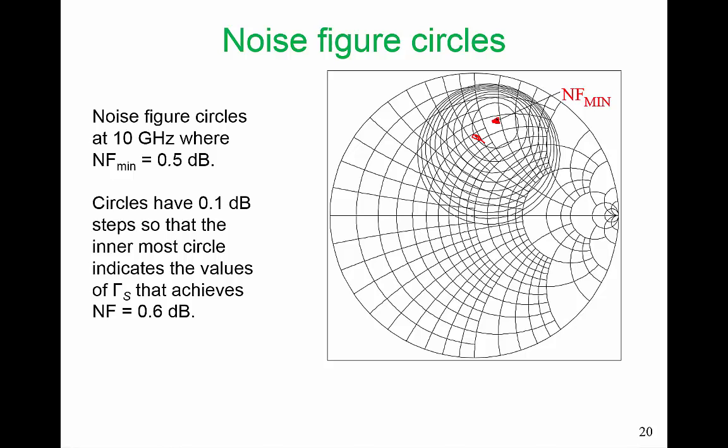If we want to use a gamma-S out here, which we may need to use to get input matching for maximum power transfer, or we may need to be down here for stability, we know how much trade-off we're making on our noise figure. We have 0.6 dB, 0.7, 0.8, 0.9, et cetera.